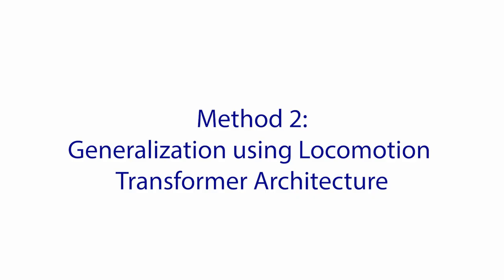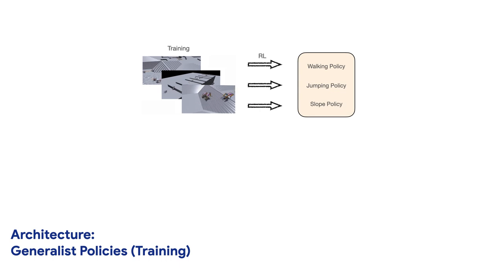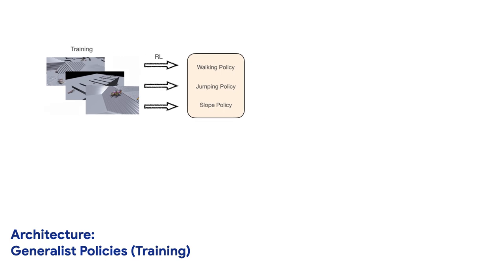In the second approach, we provide a single policy that performs all the skills and learns to transition between them. Due to the variety of obstacles and the delayed reward mechanism, the problem is hard for a single policy to learn from scratch.